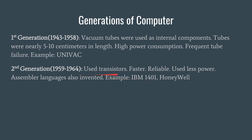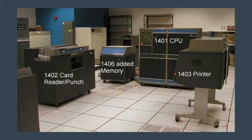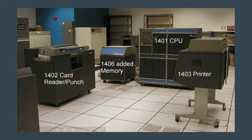The use of the transistor also reduced the size of computers by a great degree. In this picture, you can see a computing machine — this is a picture of the IBM 1401. It has four major components: the CPU or central processing unit, one printer, external or added memory, and one card reader or punch. All the instructions that were to be executed by the computer were given using this card reader using punched cards.